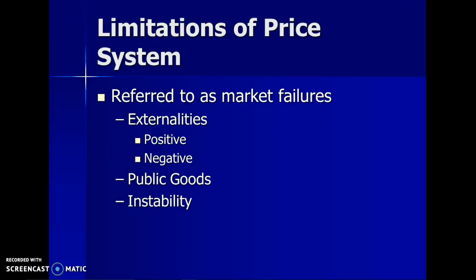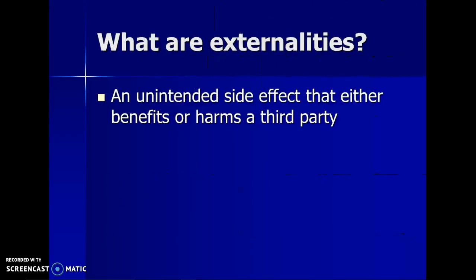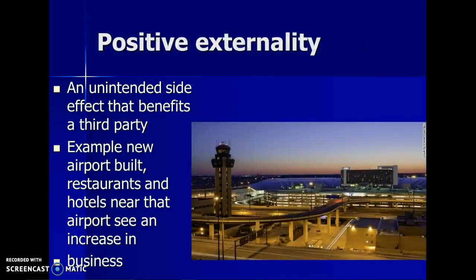There are also limitations of a price system, referred to as market failures. An externality is an example of a market failure — it's where a third party is influenced by an economic transaction when they're not directly involved in it. For instance, neighbors who bought stereo equipment from Best Buy and played music loudly would be a negative externality. A positive externality would be a new airport being built, causing restaurants and hotels nearby to see an increase in business.